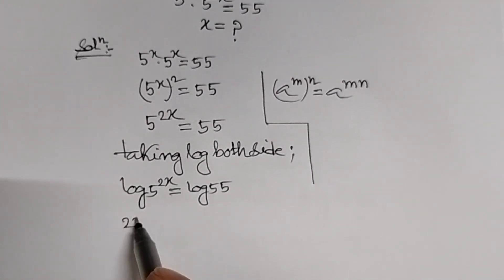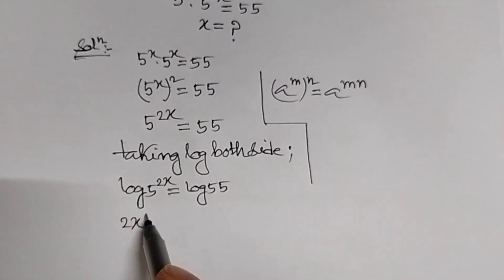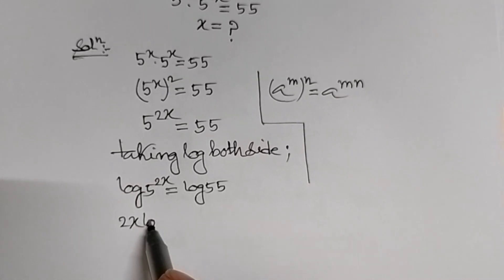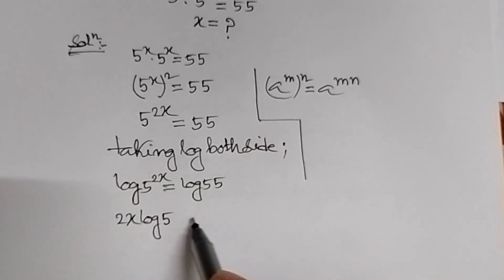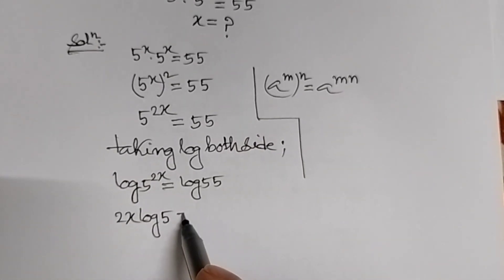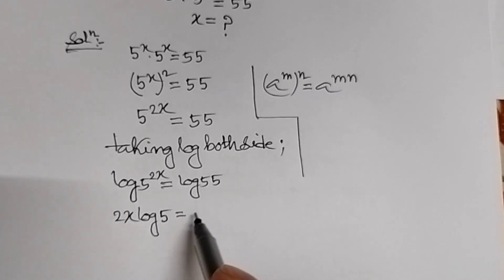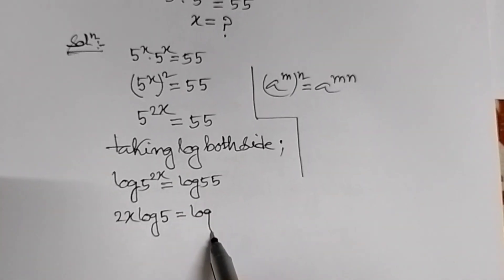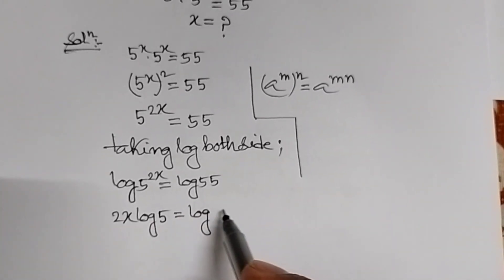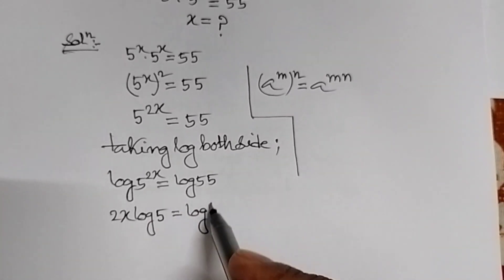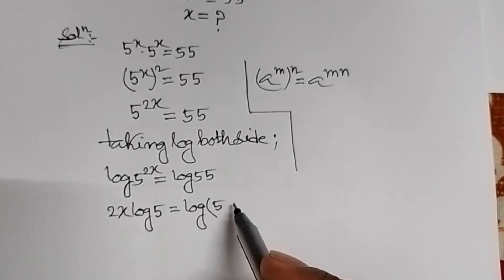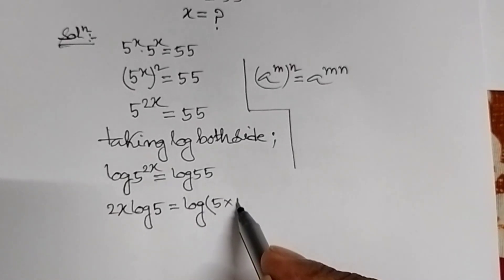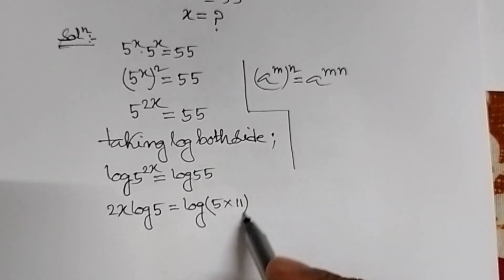Therefore, 2x log 5 equal to log of 55, which can be written as log of 5 times 11. Using the formula log a power n equal to n log a, and log of a product equals the sum of logs, we expand log of 5 times 11 as log 5 plus log 11.